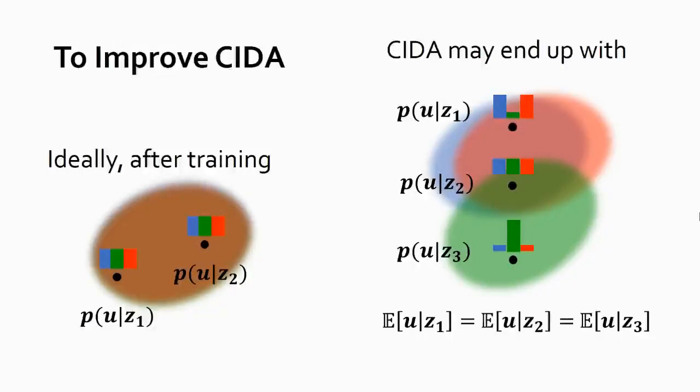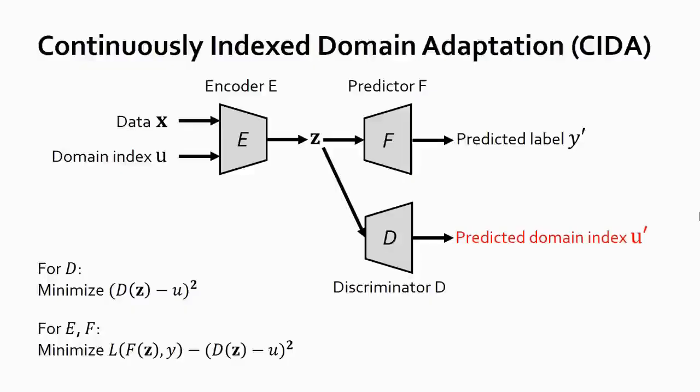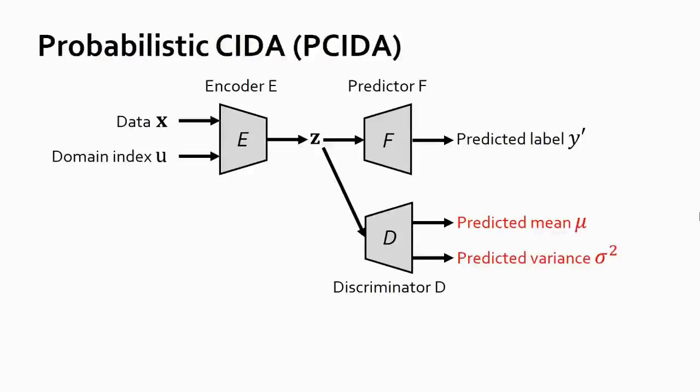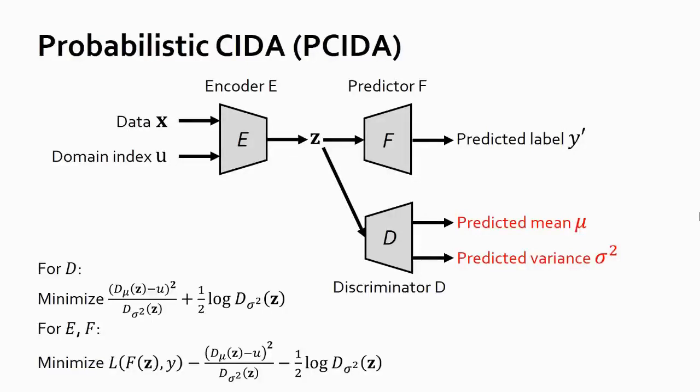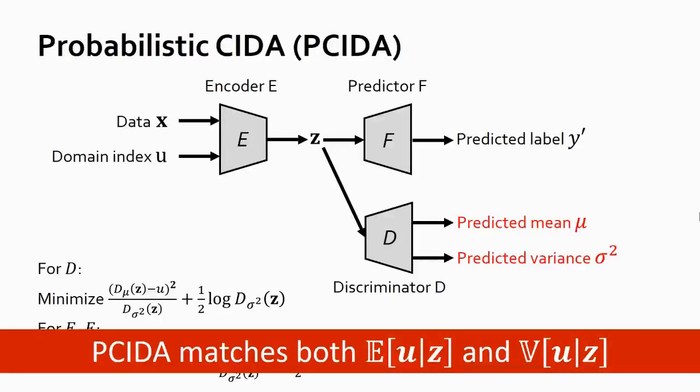To alleviate this issue, one idea is to match the variance as well. Consider the suboptimal convergence case on the right. We can actually avoid it by matching the variance of the domain index. Fortunately, this is achievable with a simple modification, which leads us to a probabilistic version of CIDA. Let me remind you that in the vanilla CIDA framework, the discriminator predicts the domain index of a given embedding, while in the improved version of CIDA, the discriminator predicts the mean and variance of the domain index. It's parameterized by a probabilistic neural network, so we call this new framework probabilistic CIDA, or P-CIDA in short. Correspondingly in P-CIDA, we need to change the L2 loss to the negative Gaussian log likelihood. Our theory shows that P-CIDA is guaranteed to match both the mean and variance of the domain index when converged.